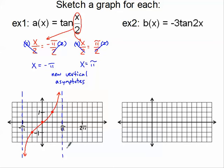Let's practice the domain. Domain has infinite restrictions: the set of all x such that x is not equal to my first asymptote, which is at pi. So x cannot equal pi. Then I figure out how far away the next asymptote is — going back, that's exactly 2 pi. So I add a multiple of 2 pi k. That's my domain.